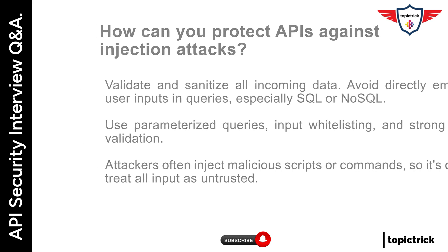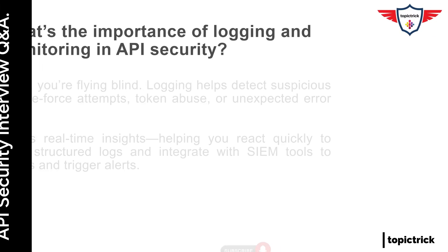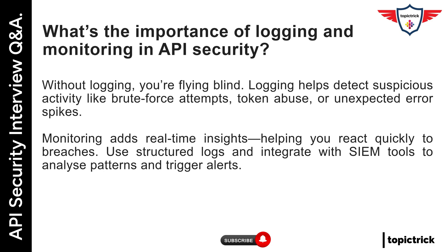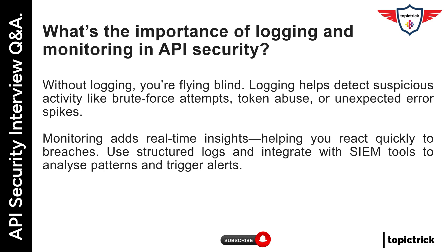What's the importance of logging and monitoring in API security? Without logging, you're flying blind. Logging helps detect suspicious activity like brute force attempts, token abuse, or unexpected error spikes. Monitoring adds real-time insights, helping you react quickly to breaches. Use structured logs and integrate with SIEM tools to analyze patterns and trigger alerts.